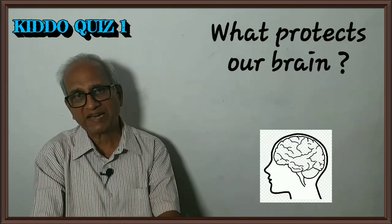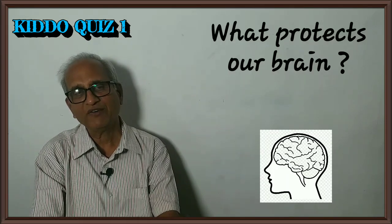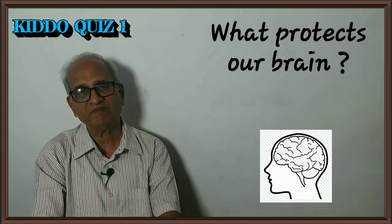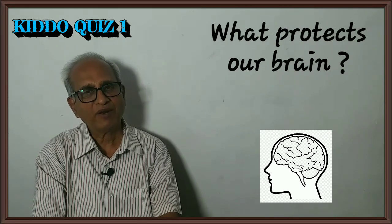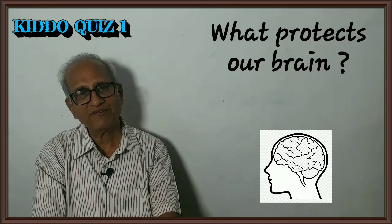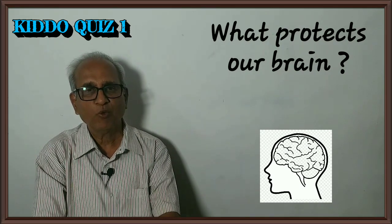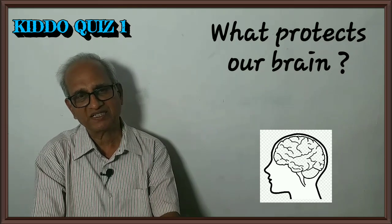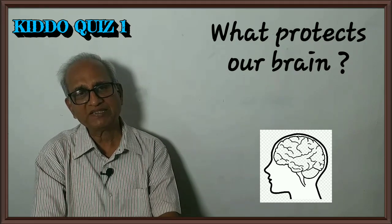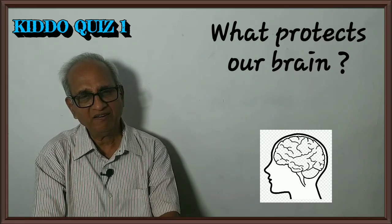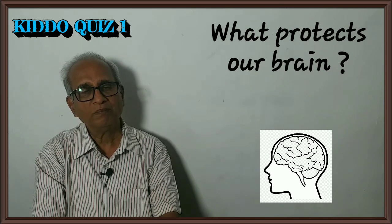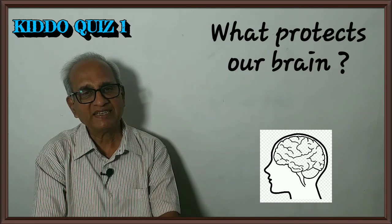The lamps signify 'Tamasoma Jyotirgamaya' — we drive away darkness by lighting lamps. So the answer is Diwali or Deepavali. Third question: What protects our brain? Our brain is a very delicate organ. What is it that protects the brain from any accident?